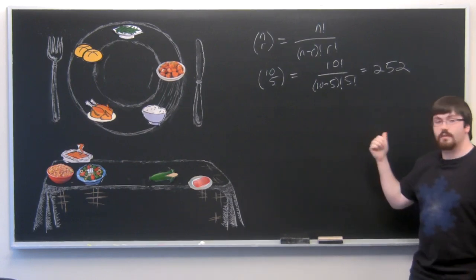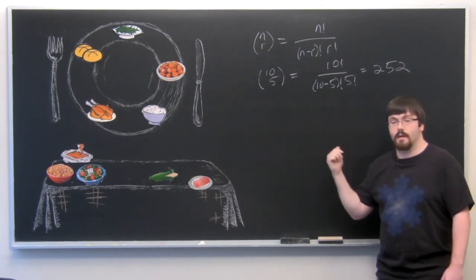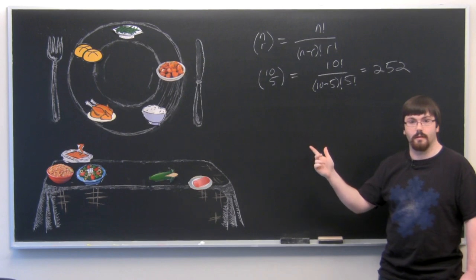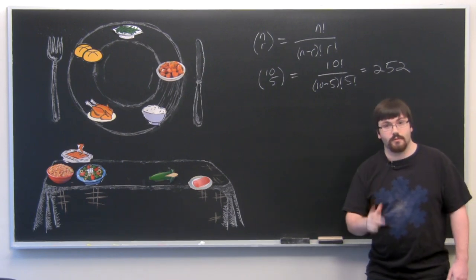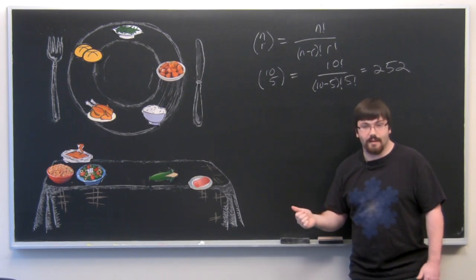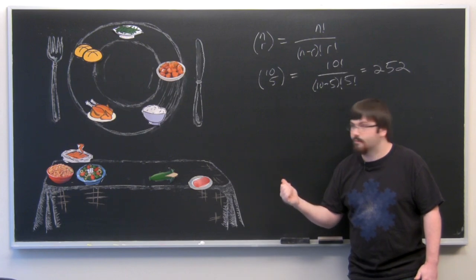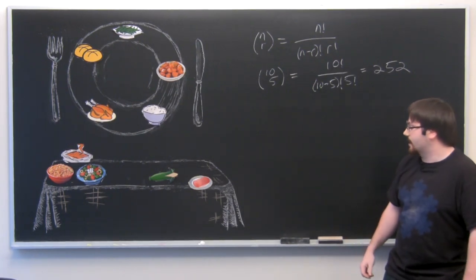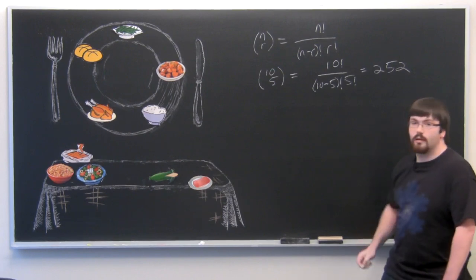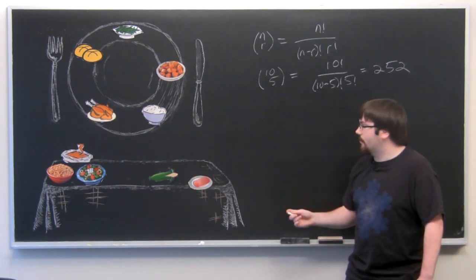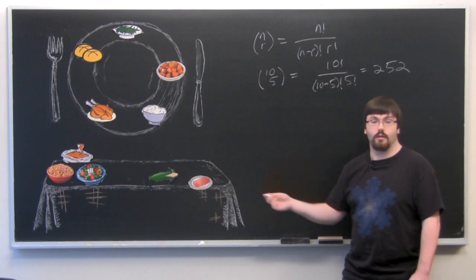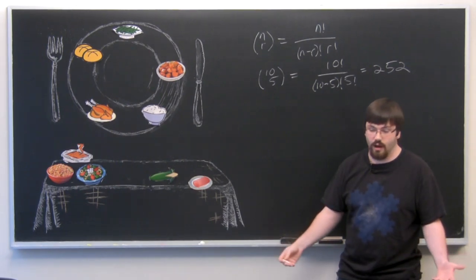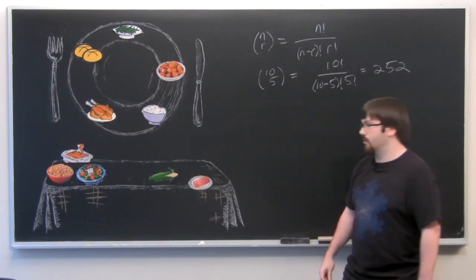So that's 252 ways that we can pick our first dinner plate. The key word there is first. It's Thanksgiving. You've got to go up for seconds, right? So that brings up a whole new scenario. Now I have to pick my seconds. Well, it depends what I want to go up for.